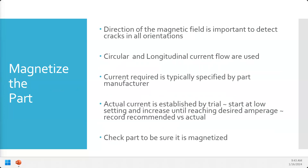You can run different materials at once — for example, connecting rods with the bronze bushings still installed. It won't hurt anything. The interface where the steel connecting rod and bronze bushing meet will collect particles, but that's a non-relevant indication because the field is jumping at that material boundary. The bronze bushings won't stay magnetized to the same level as the steel connecting rod, but they will be subject to the residual magnetic field of the surrounding steel.